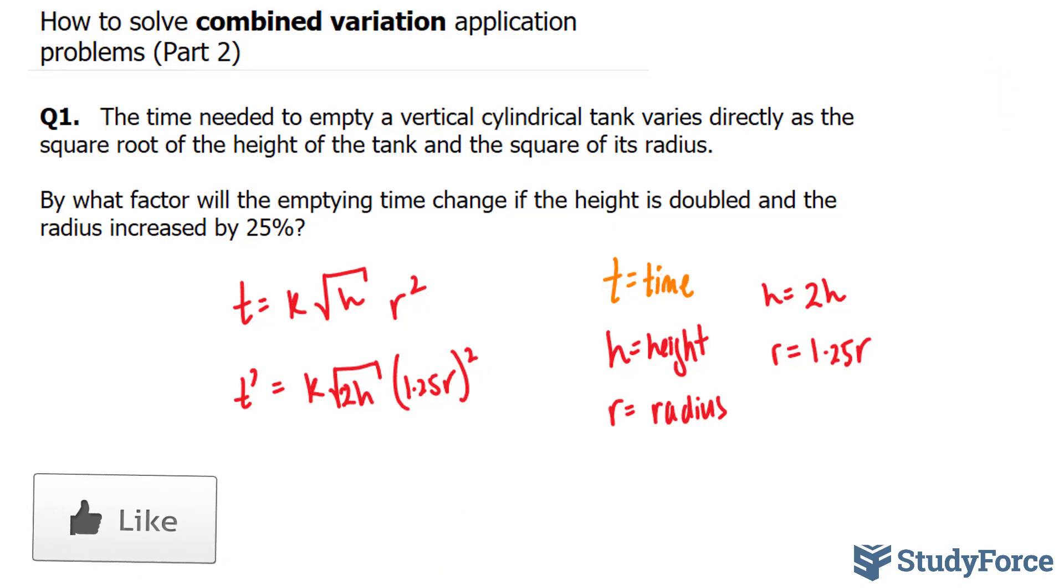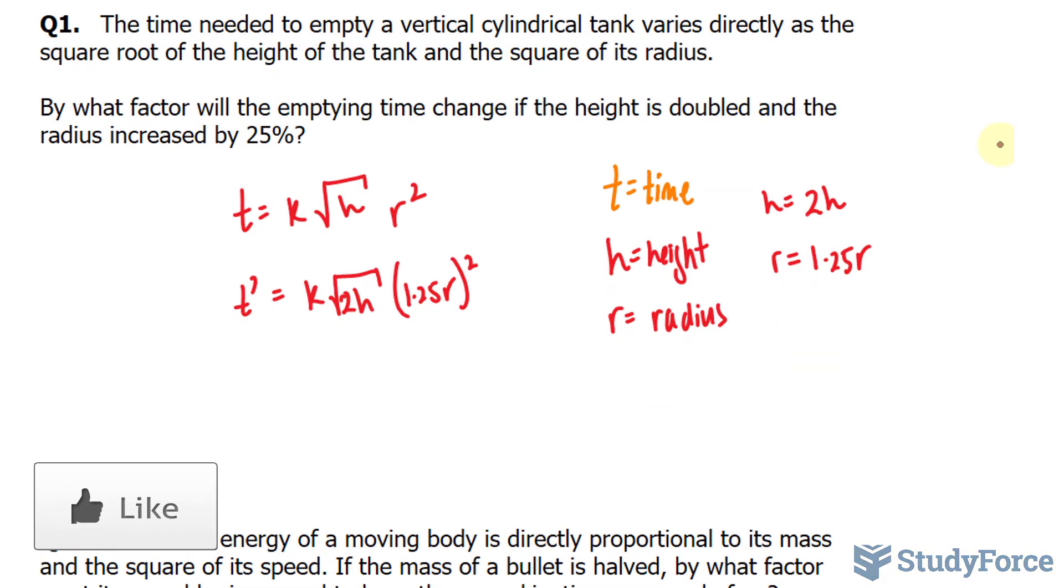The next step is to simplify wherever we can on the right side of this equation. By putting these brackets around both the 1.25 and the r, now I can distribute this 2 to 1.25 and to the r. In addition, you see the square root of 2h?